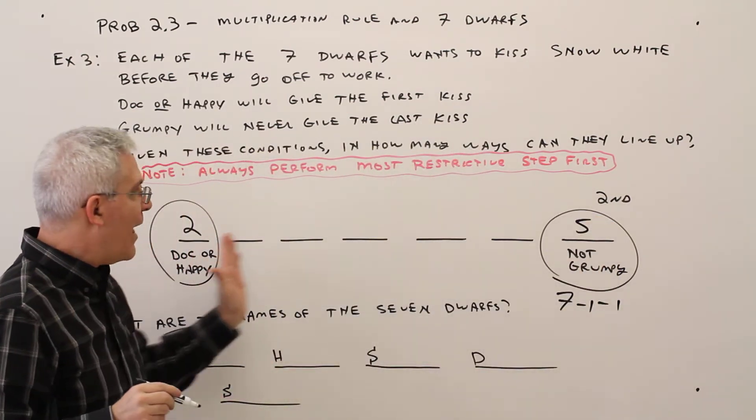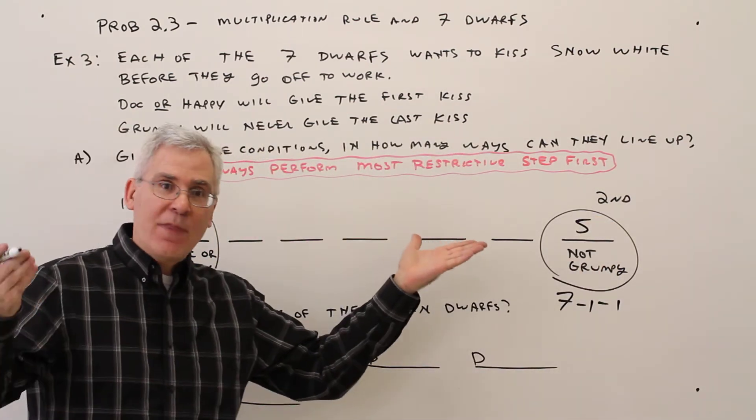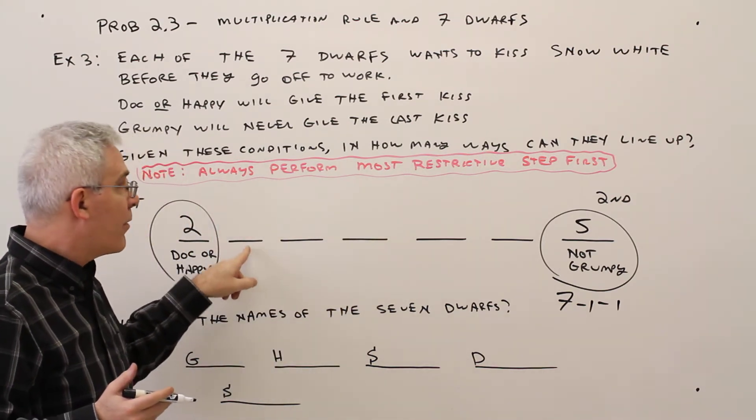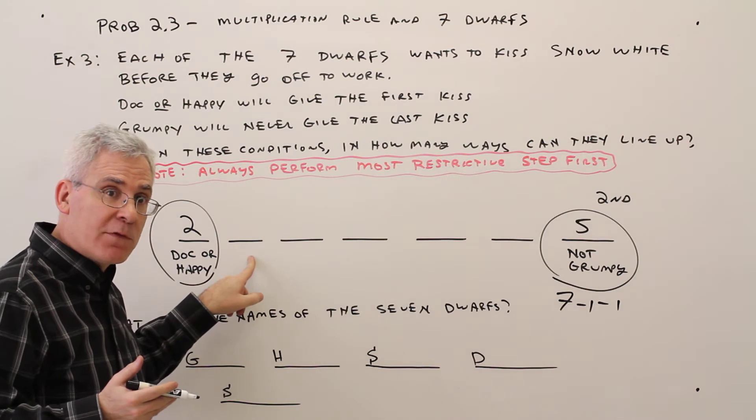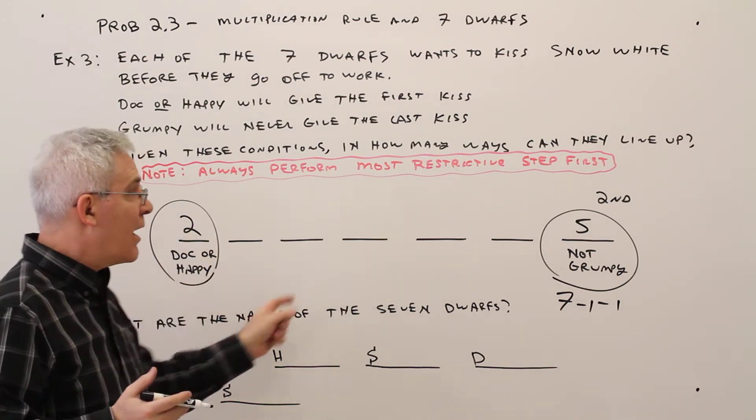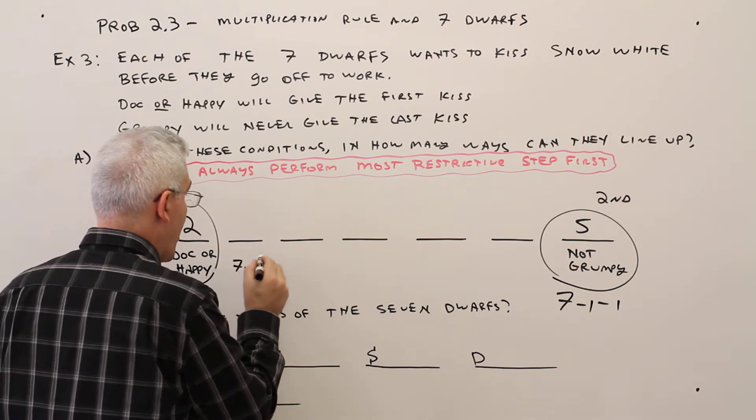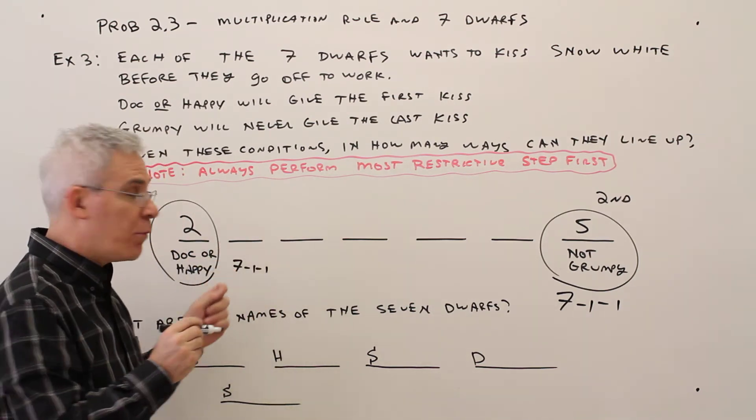Okay, then these have no constraints. I'll just go from left to right then. All right, over here. Be any of the seven dwarves. Don't be that one and don't be that one. So again, it's seven minus one minus one, which is another five.